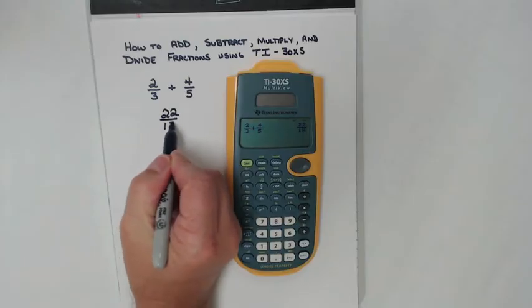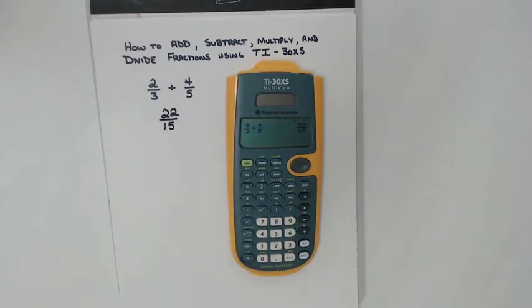In another video, I'm going to go over how to change this into a mixed number. If it doesn't give you instructions and it doesn't say it has to be in a certain form, then 22 fifteenths is fine. But I'm going to go over in another video how to change this into a mixed number.